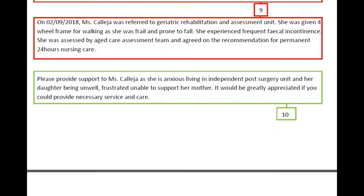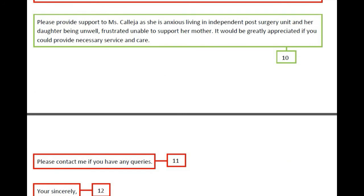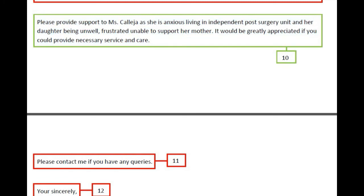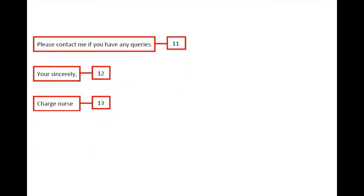Moving on to the fourth paragraph: 'Please provide support to Miss Collegia as she is anxious living in an independent post-surgery unit, and her daughter being unwell and frustrated, unable to support her mother. It would be greatly appreciated if you could provide the necessary service and care.' This is correctly written but does not specify the kind of service required. For the windup sentence, you must mention the patient's name: 'Please contact me with any queries regarding Miss Collegia.' The sign-off 'Your Sincerely' is wrong — the writer should use 'Yours' instead of 'Your.' The correct form is 'Yours sincerely, Charge Nurse,' with both C and N capitalized.